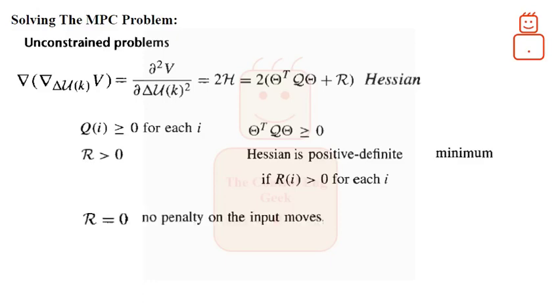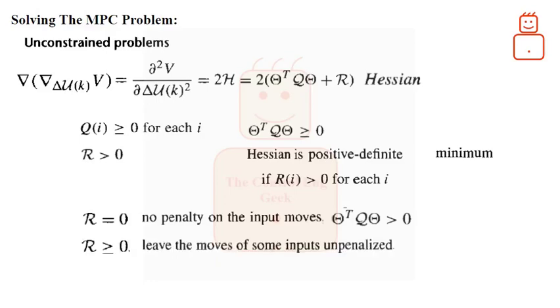But sometimes we may want to have no penalty on the control inputs, which would lead to R be zero. In this case, we need the first term in the Hessian matrix to be positive definite, in order to have a minimum. In a more general case, we may want to leave the moves of some inputs unpenalized, or the moves at some points in the control horizon unpenalized. Here, we will have R as a semi-positive definite matrix. In this case, however, we need all the Hessian B positive definite.